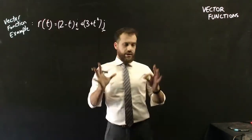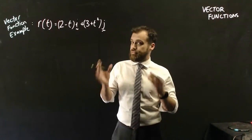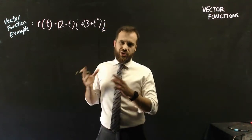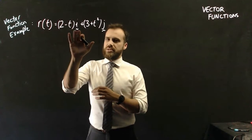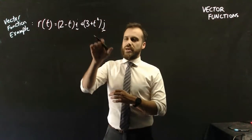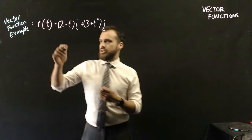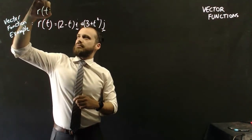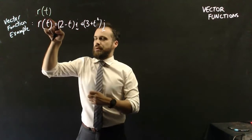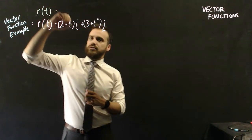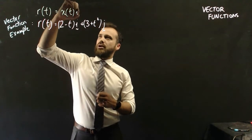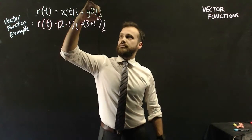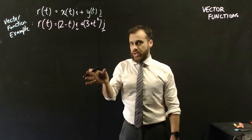Objects in motion. Here is an example of a vector function. The i component is 2 minus t, where t is time, and the j component is 3 plus t squared. We can write this generally as: the vector r with respect to time equals some function of time times i, plus some function of time times j.